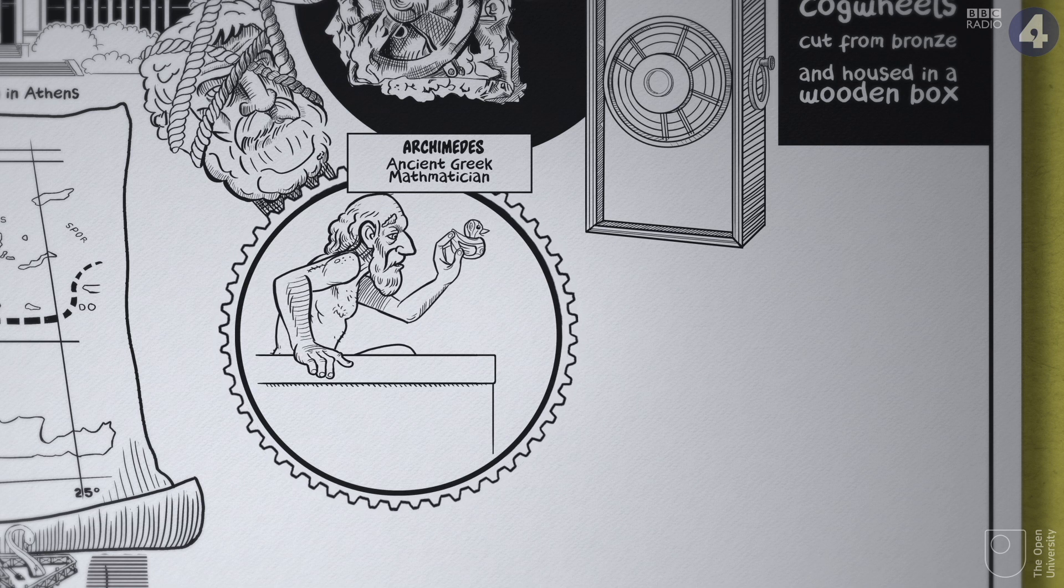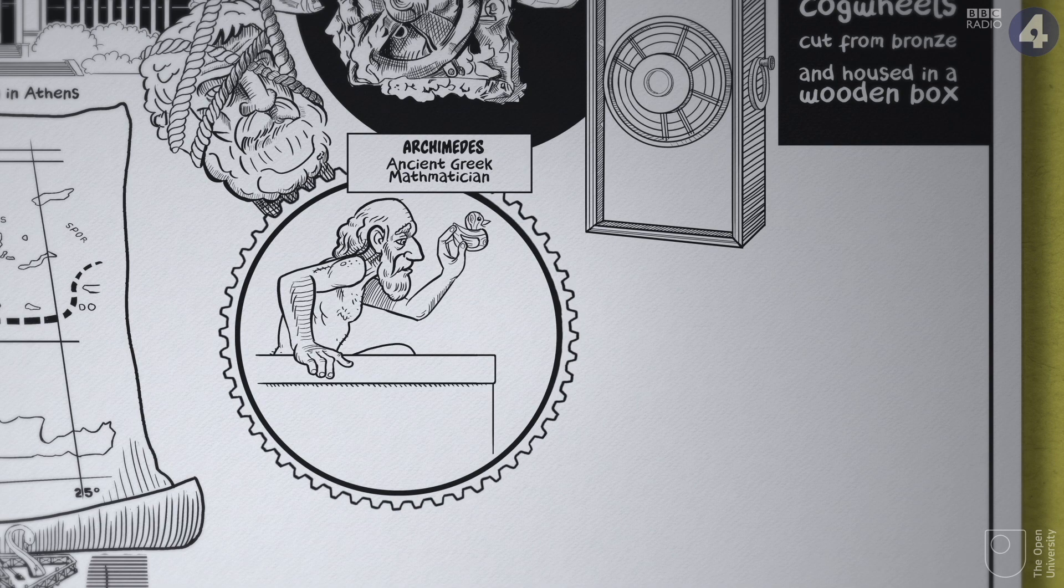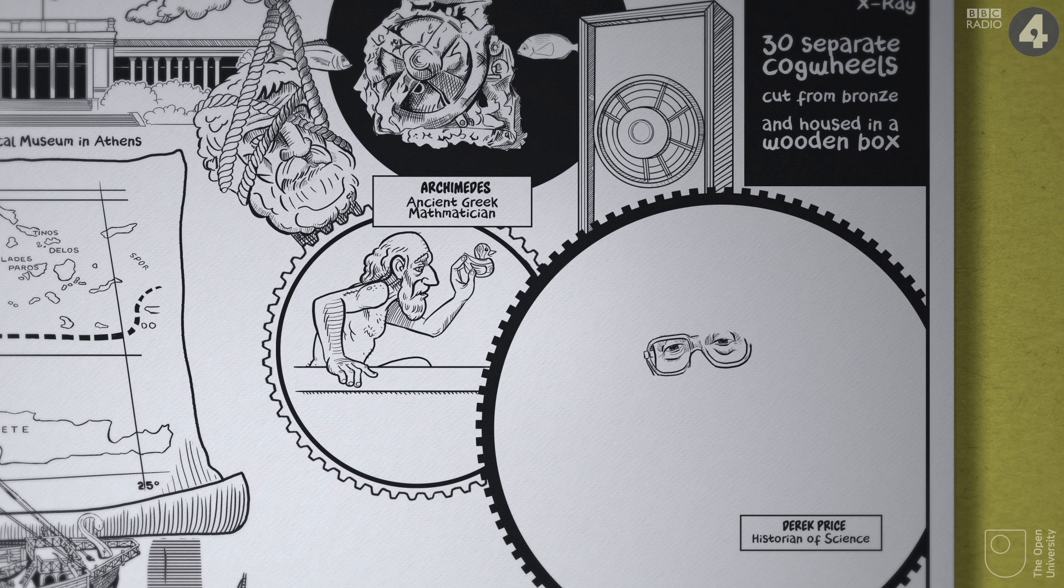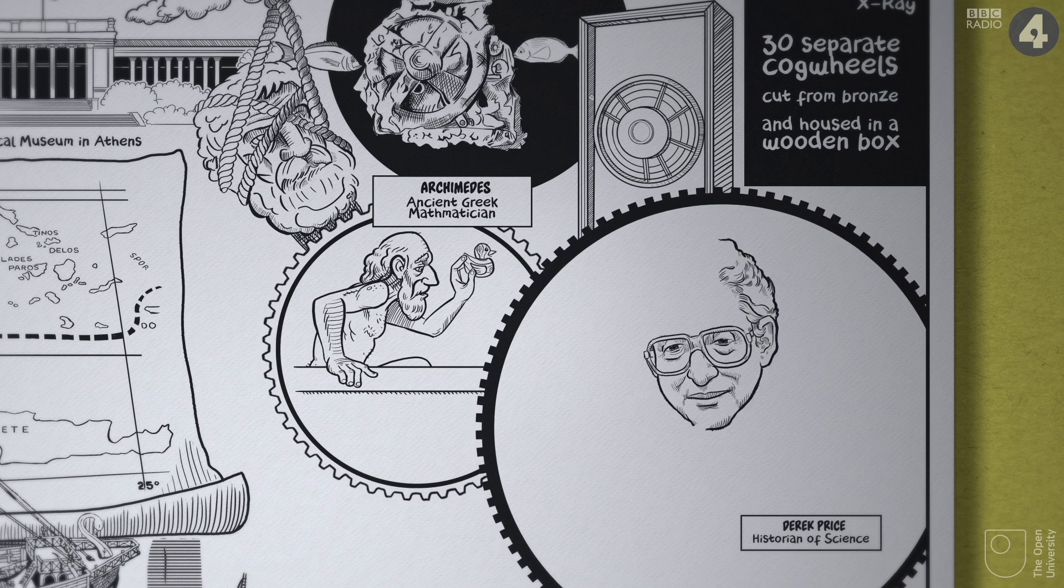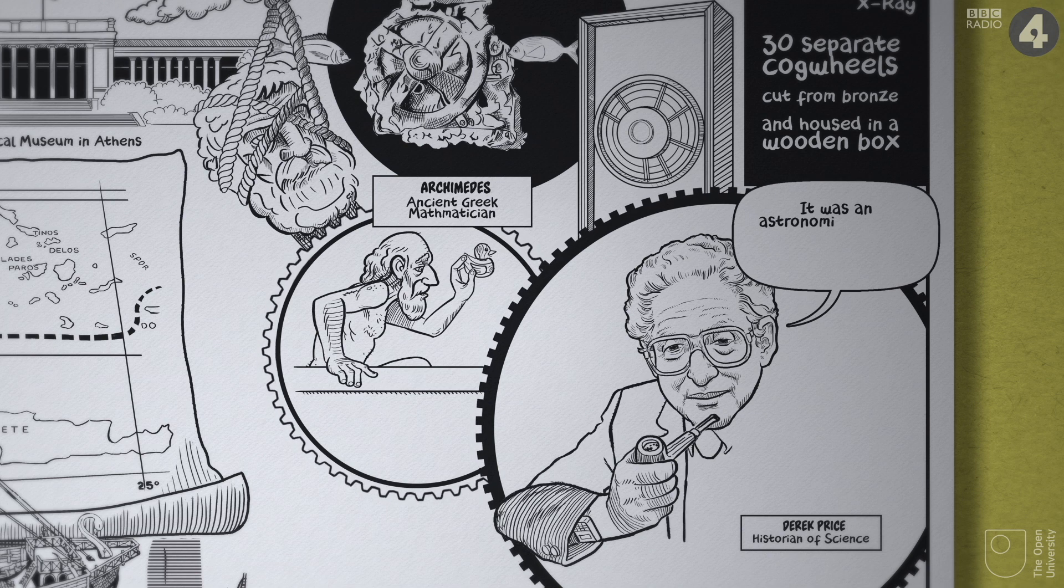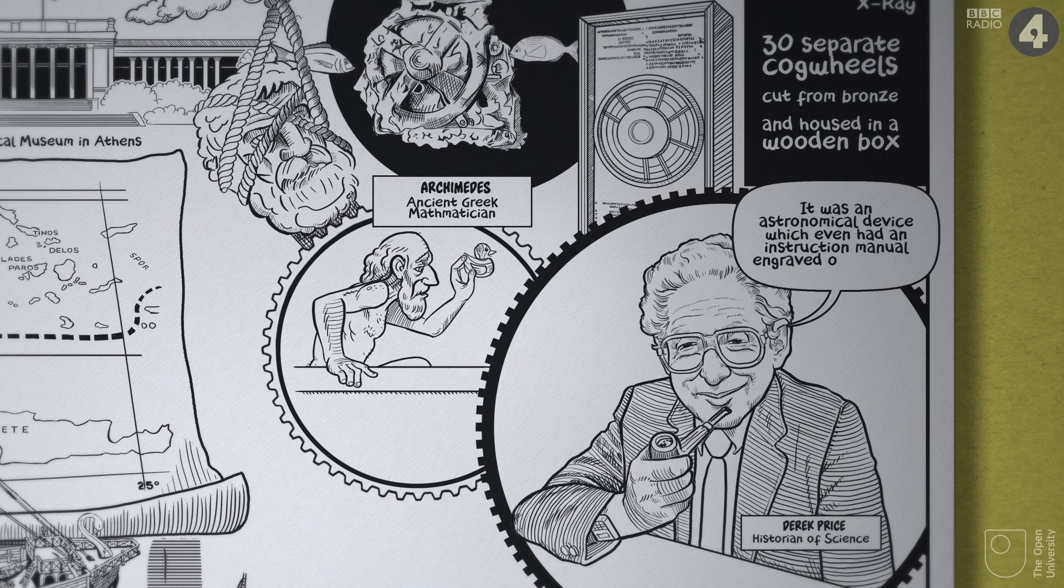Scientists and archaeologists puzzled about what it could possibly be. From analysis of the position and number of teeth of the cogwheels, Derek Price, a British historian of science, eventually worked out that it was an astronomical device, which even had an instruction manual engraved on the side.